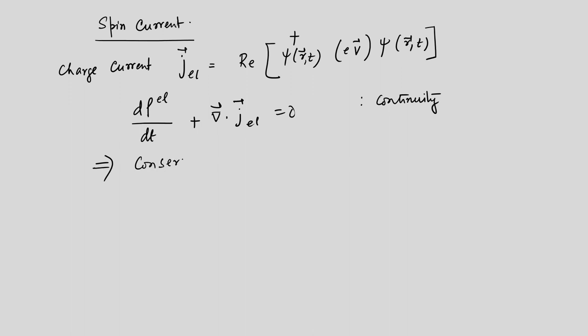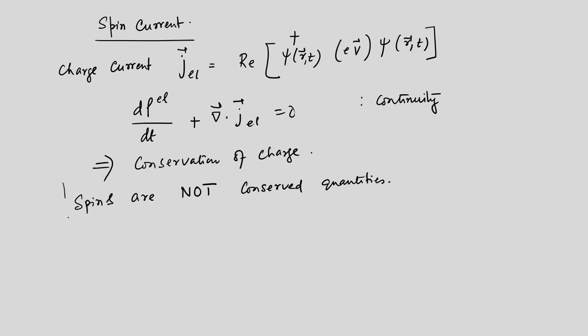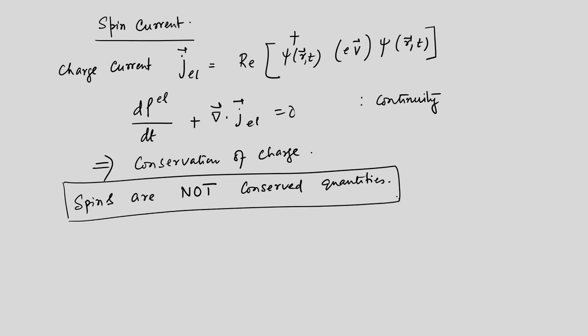This is conservation of charge. As opposed to that, spins are not conserved quantities — this is an important statement. This happens because in most of these materials, at least the ones we are talking about now, they have spin-orbit coupling, and in the presence of spin-orbit coupling the components of S are no longer good quantum numbers, just as we have seen for L·S coupling.